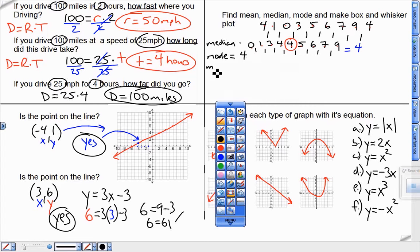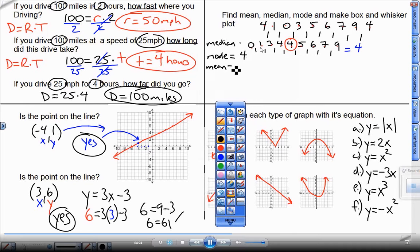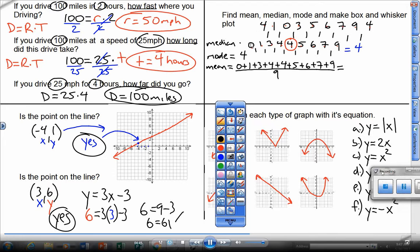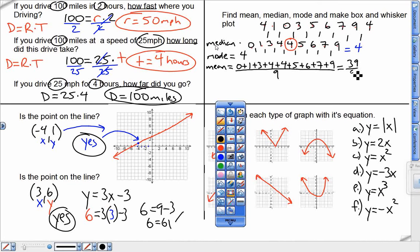For the mean, I'm going to add up all these numbers and divide by 9. Make sure you're counting 0 as one of the numbers. So 0 plus 1 plus 3 plus 4 plus 4 plus 5 plus 6 plus 7 plus 9. If I add them all up, that gives me 39, I believe. Now I'm going to divide that by 9 because 0 is one of the numbers. I wouldn't want to divide that by 8. That would be a mistake. So 39 divided by 9, rounded to two decimal places, is 4.33.